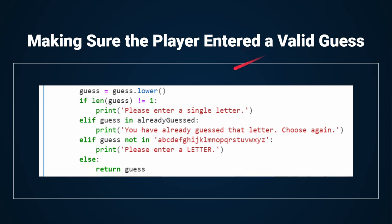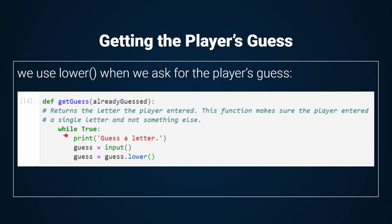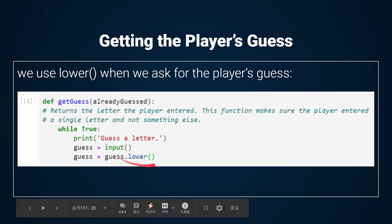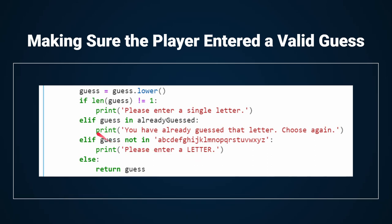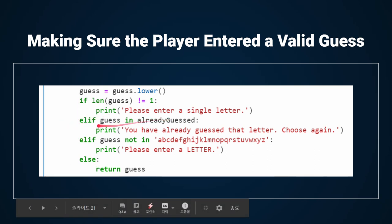Even if the player enters an uppercase letter, the getGuess function will return a lowercase letter. The while loop will keep asking the player for a letter until they enter a single valid letter. The code inside the loop asks the player to enter a letter, which is stored in the variable guess. If the player entered an uppercase letter, it will be overwritten with a lowercase one. The next part uses elif statements. You can think of elif, or else if, as saying: if this is true do this, or else if this next condition is true do that, or else if none of them is true do this last thing.